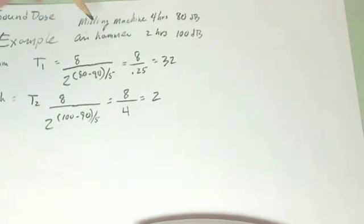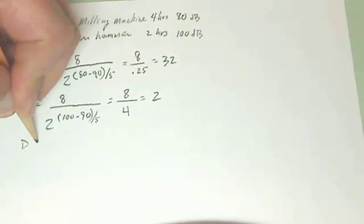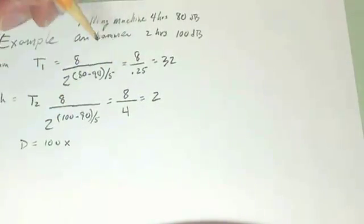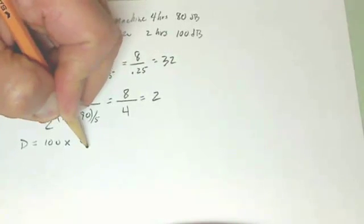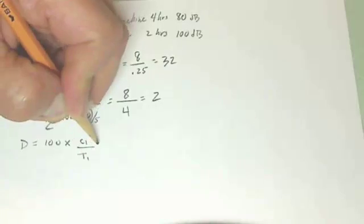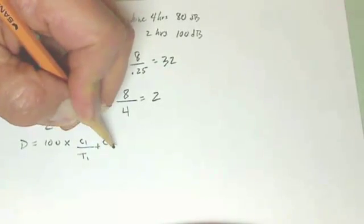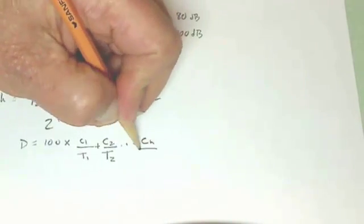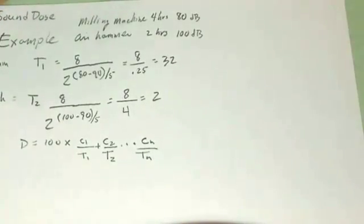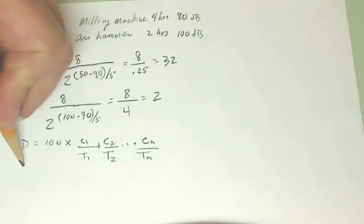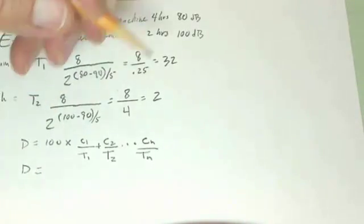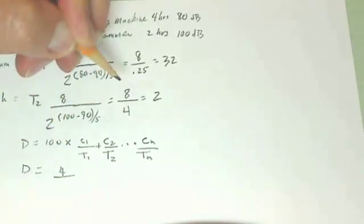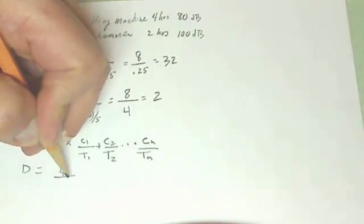Then the last part that we have to do is to plug it into the overall formula, which is D is equal to 100 times, and here's where we do the C1 over T1 plus C2 over T2, and that just goes on for as many as you have total. That's the formula we're going to plug it into.